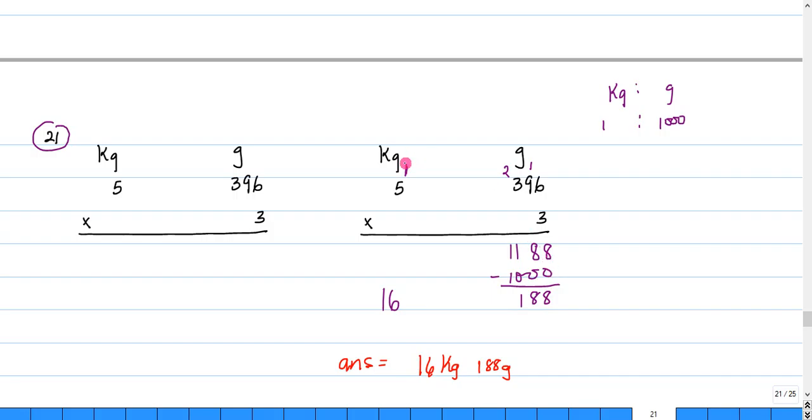Three times 5 would be 15, 15 and one more would be 16. Our answer for number 21 is 16 kilograms and 188 grams.